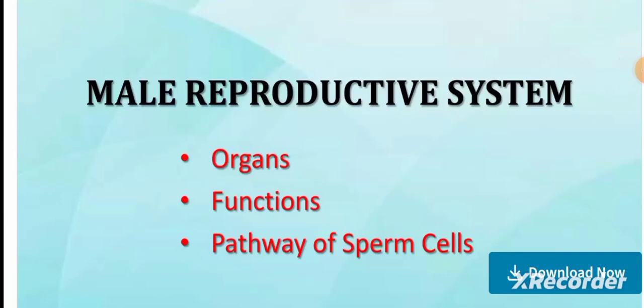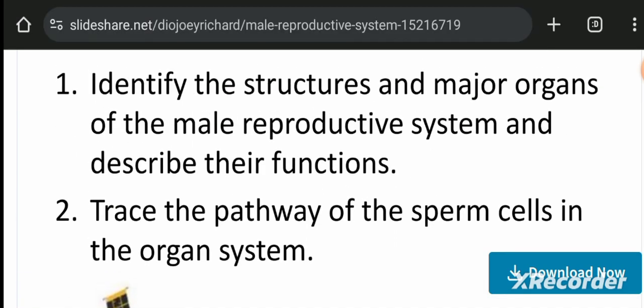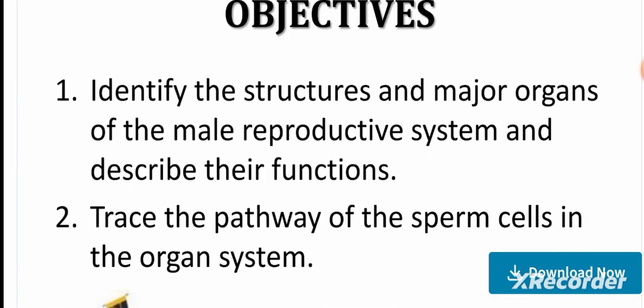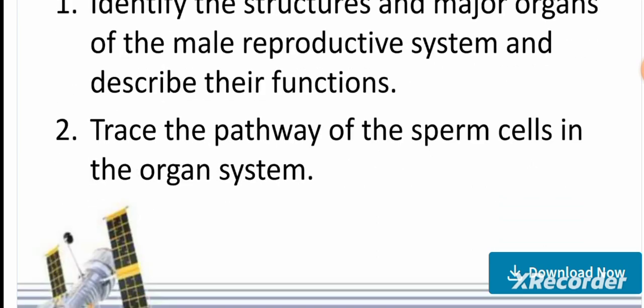Now let's start with the next topic: the male reproductive system. We will cover the different organs, their functions, and the pathway of sperm cells. The objectives are: first, identify the structures and major organs of the male reproductive system and describe their function; second, describe the pathway of sperm cells through the organ system.